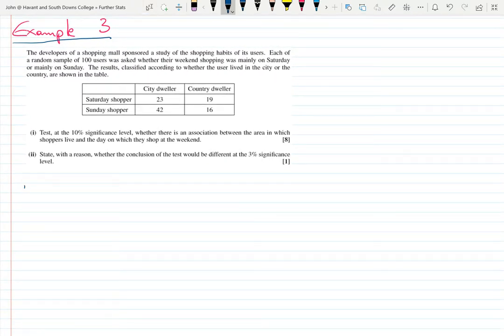I say we can either use the word association or more commonly I'm seeing the word independent used. You can use either really, but H0 is that shopping habits are independent of whether shopper is city dweller or country dweller.